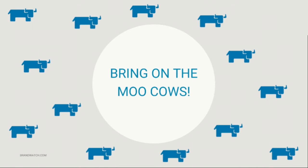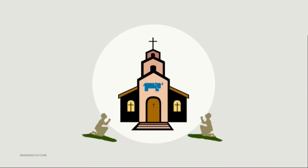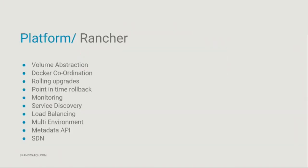Bring on the moo cows - this is the Rancher logo. I've really been converted to the Church of Rancher; when we first started using it we were like, oh my God, this is incredible, this ticks so many boxes for us. What does Rancher provide? Volume abstraction, coordination, point-in-time rollbacks, rolling upgrades, monitoring, service discovery, load balancing, multiple segregated environments so you can control dev, staging, and live all from the same control system, a really nice metadata API, and software-defined networking features.